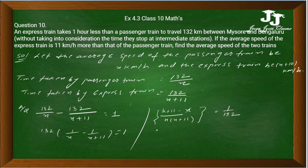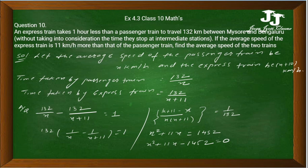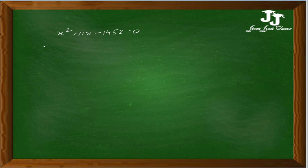Cross multiplying, we get x squared plus 11x equals 1452. Rearranging: x squared plus 11x minus 1452 equals zero. Now we factor this quadratic: x squared plus 44x minus 33x minus 1452 equals zero.